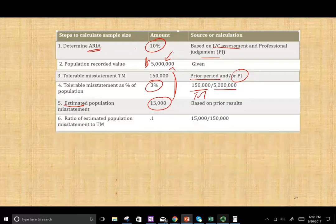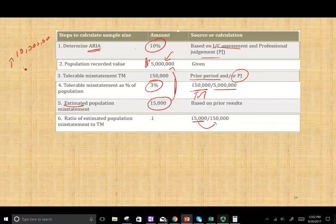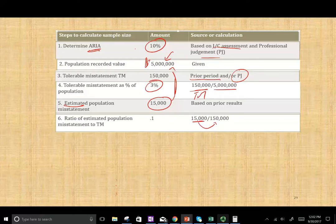The next step is to compute the ratio of estimated population misstatement to tolerable misstatement: $15,000 divided by $150,000 equals 0.1, or 10%. We'll need this figure later. Also worth noting: what happens if your population goes up — say from $5 million to $10 million? Generally speaking, N should be higher, though not proportionally. If you go from $5 million to $10 million, you don't have to double your sample size, but as your population goes up, your sample size goes up.